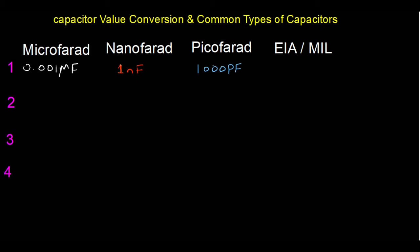How is this value expressed in EIA or mil code? The EIA/mil code is directly in picofarads. The first two digits are written as-is, and the third digit is the multiplier (power of 10). So 1000 pF is represented as 102, meaning 10 × 10² = 1000 pF.